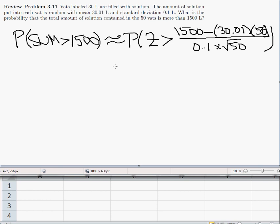So that would be the probability that we need to find, so the probability that z is bigger than 1,500 minus 1,500.5 divided by 0.1 times the square root of 50.